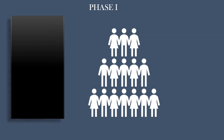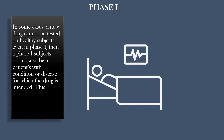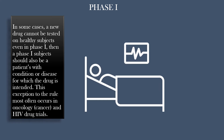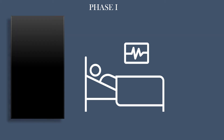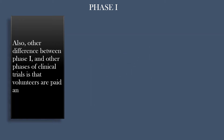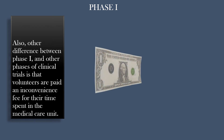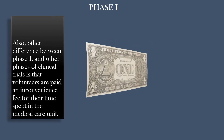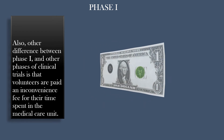In some cases, a new drug cannot be tested on healthy subjects even in Phase 1; then Phase 1 subjects should also be patients with the condition or disease for which the drug is intended. This exception most often occurs in oncology (cancer) and HIV drug trials. Also, another difference between Phase 1 and other phases is that volunteers are paid an inconvenience fee for their time spent in the medical care unit. According to the FDA, approximately 70 percent of medical products move on to Phase 2.